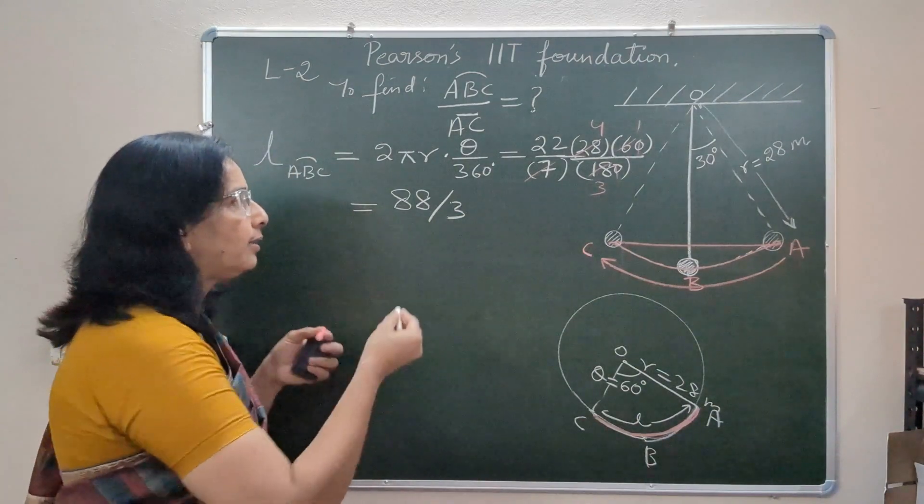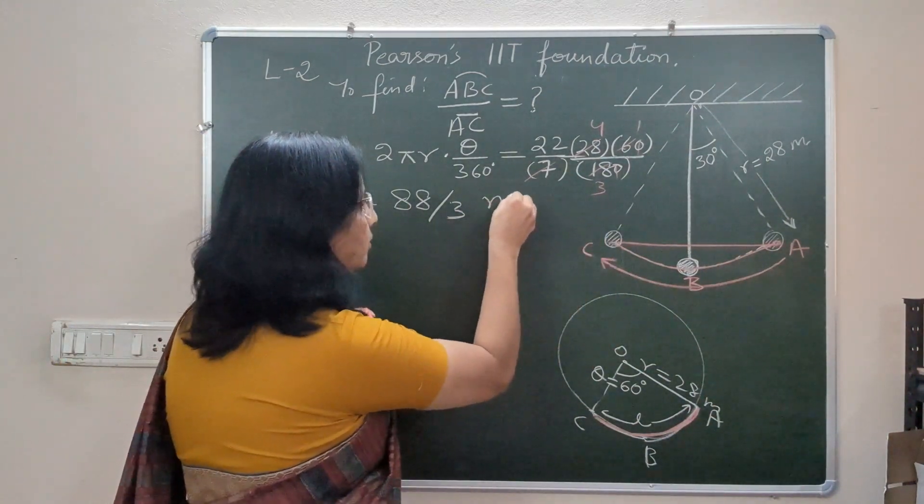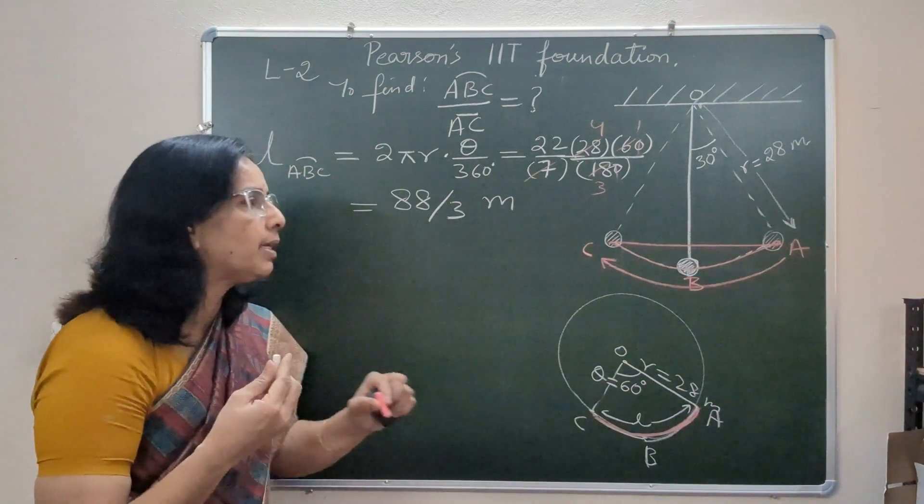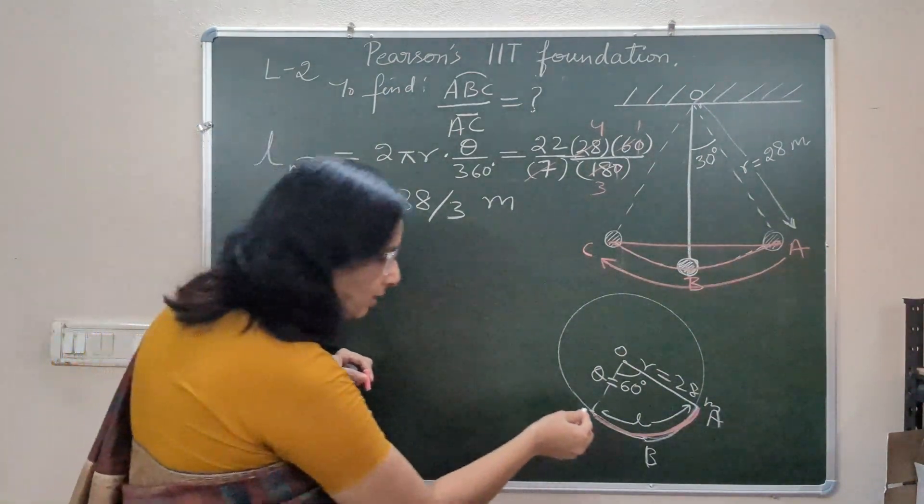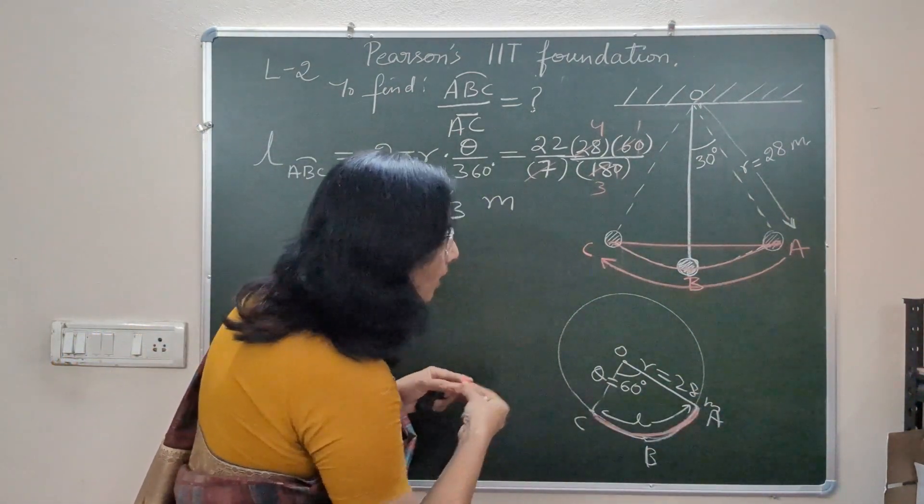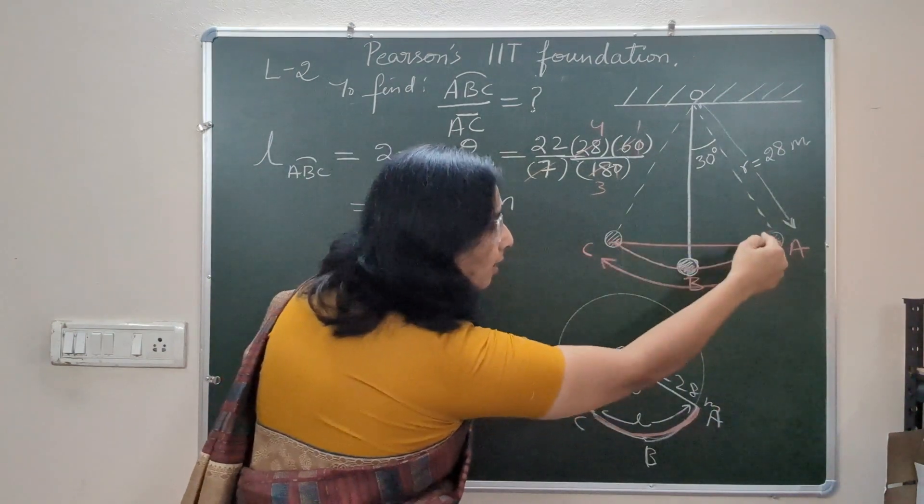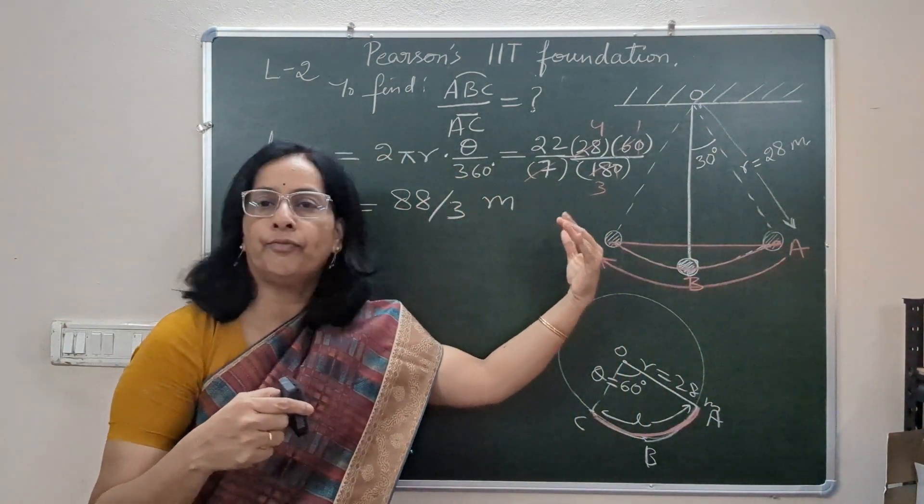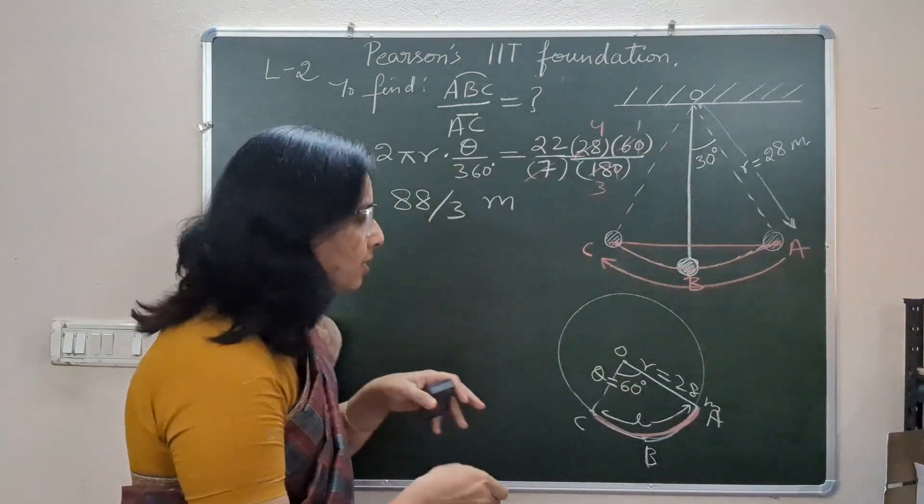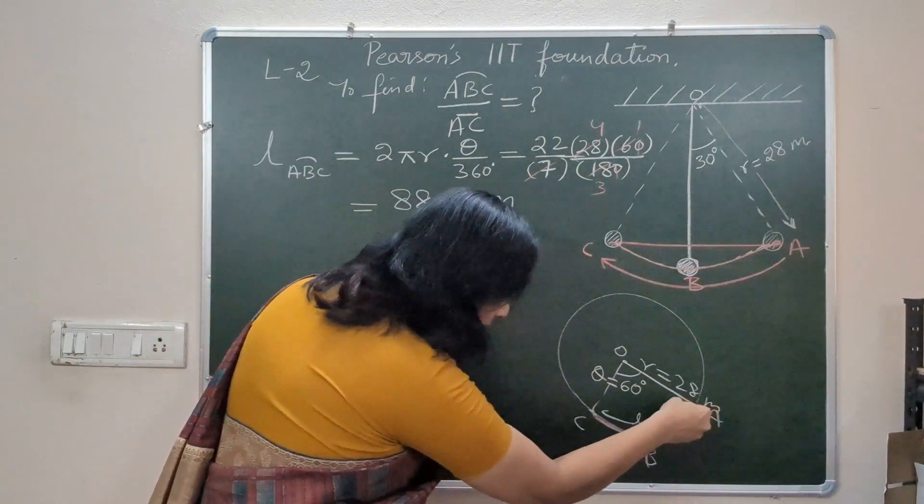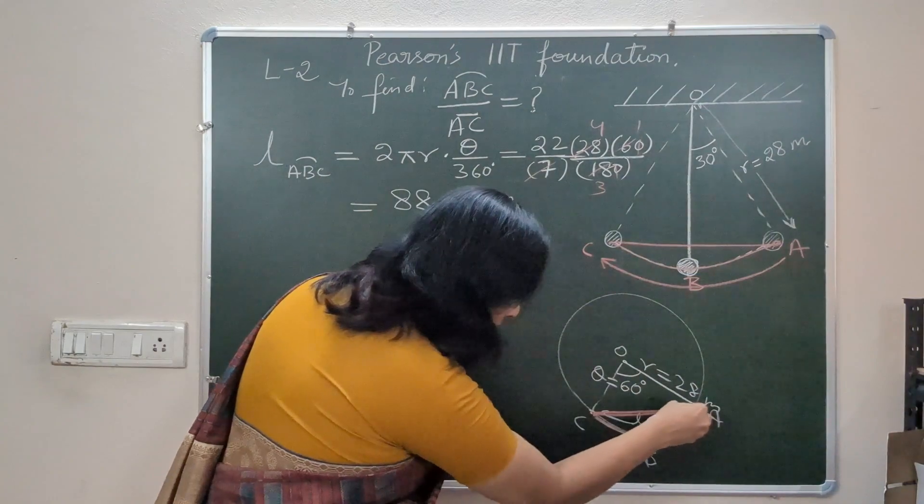Because it is length of arc it comes in units, so the unit is MKS system meters. Then we have to find what is displacement, displacement between one extreme position to another extreme position. So if you observe this diagram, we have to find this.